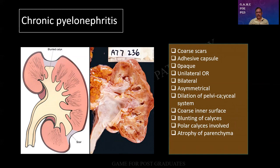It can be unilateral or bilateral. Unilateral — one example is if there is going to be a renal stone in the ureter on one side, there can be a tumor that is impinging on one ureter, there can be unilateral pyelonephritis. Bilateral — when the obstruction is going to be lower down: chronic prostatic hyperplasia, posterior urethral valve, etc. And whatever be it, it is asymmetrical. Dilatation of the pelvicalyceal system. There is a coarse inner surface, blunting of the calyces, polar calyces are involved.